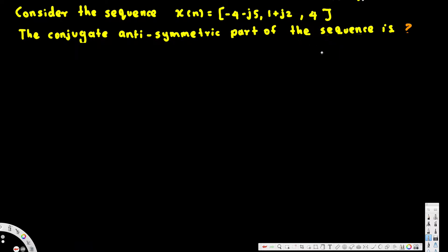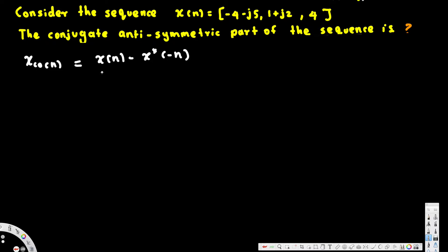There are two parts — we can have the conjugate antisymmetric part or the conjugate even (symmetric) part. Since the question mentions antisymmetric, we need the conjugate odd part. To find x_co(n), we use the equation: x(n) minus x-conjugate of negative n, divided by 2.